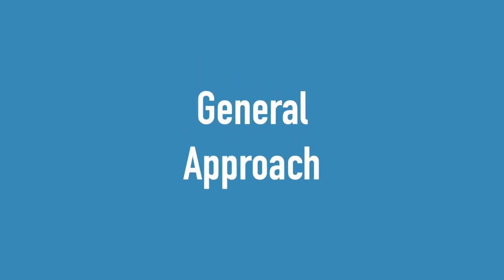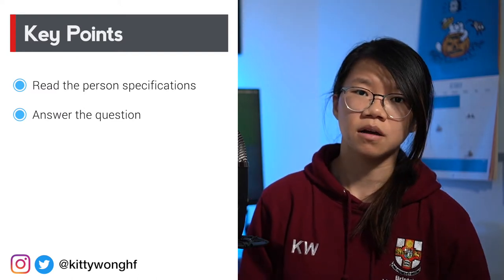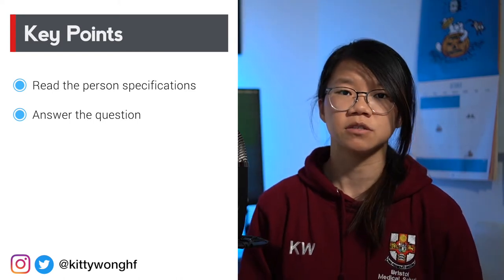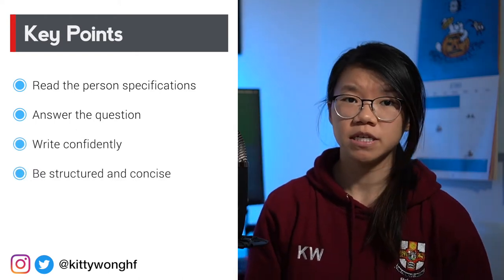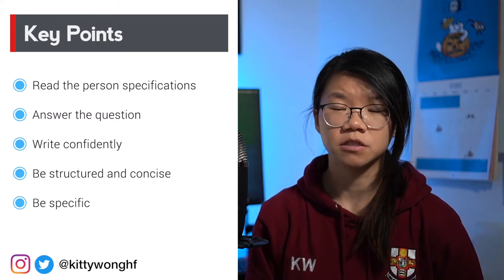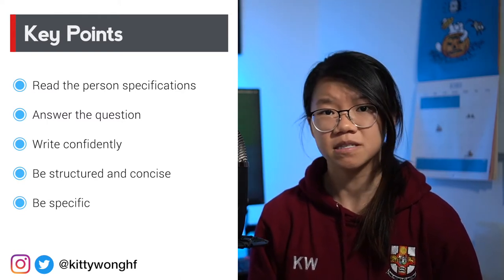So what general approach should you take when writing a white space question? Always read the personal specification for that deanery. Although descriptions of the ideal candidate are often vague, sometimes they state particular qualities or characteristics they want, and you want to come across as someone who's done their homework. Second, make sure you're actually answering the question. If the white space question asks you to list one example of your academic achievements, even if you've published 10 papers, only describe the most impressive one — you will not score points for others you list, and you risk losing points for not describing one in detail.